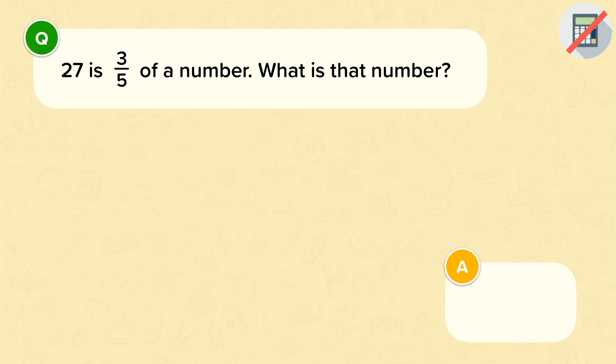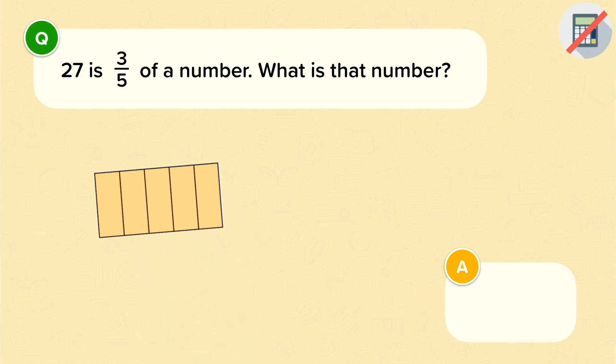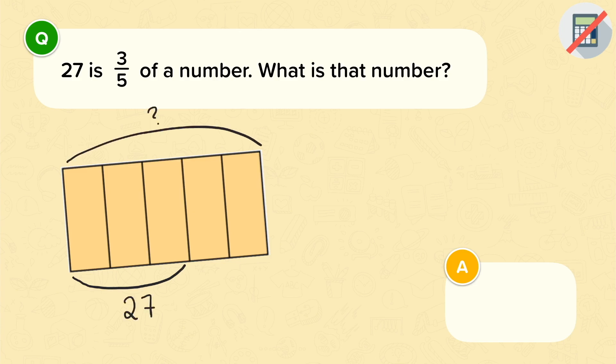Let's try another one. 27 is 3 fifths of a number. What is the number? So again, I'm going to use a diagram to illustrate. So 27 is 3 fifths. And I want to work out what the whole number is.